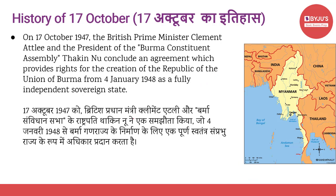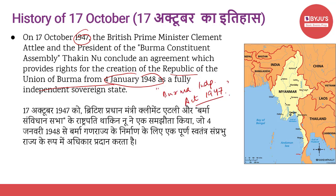Iske baad chalte hain apne third fact ki taraf: ki kaise 17th October 1947 ko, British Prime Minister Clement Attlee aur President of Burma Constituent Assembly Thakinnu ke beech mein agreement conclude hua tha, jiske tahit Republic of Union of Burma form hui thi as an independent sovereign state on 4th January 1948. This country was established as a separate state as a result of the Burma Independence Act 1947. Aur agar baat ki jaye Burma ke baare mein, toh ye aaj ka modern day Myanmar hai, and its capital is Naypyidaw, aur largest city hai Yangon, jo pehle yahan ki capital bhi thi.